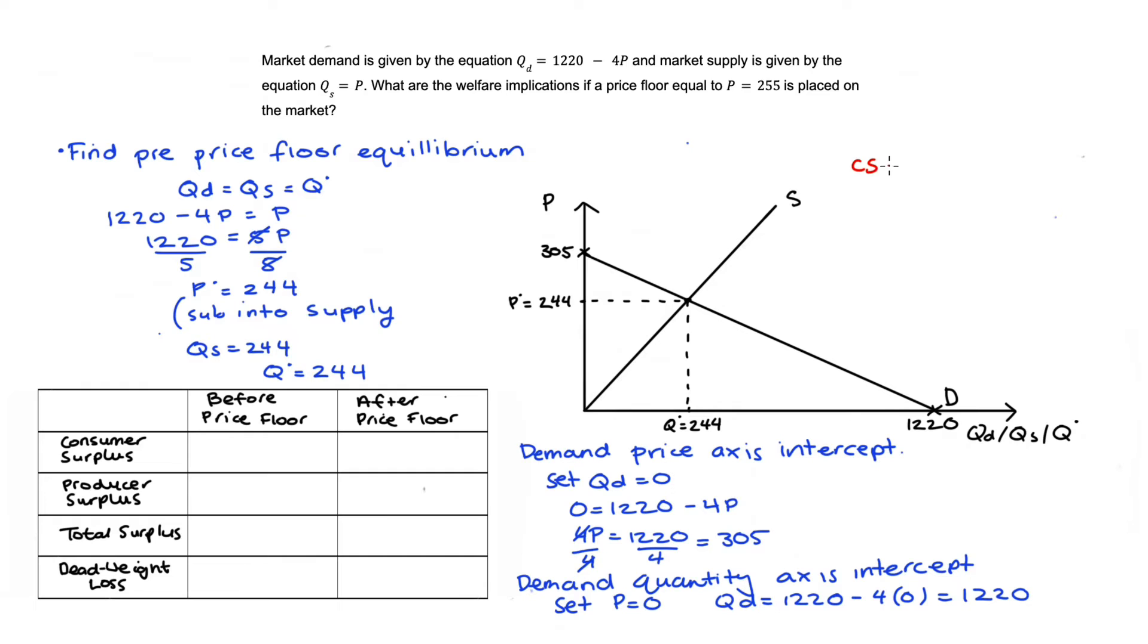As for our welfare, consumer surplus (CS) is the area below demand above the price line. This area is a triangle so we can use the formula half times base times height. Our base is 244 and our height is 305 - 244 = 61. So we get 1/2 × 244 × 61 = 7,442.